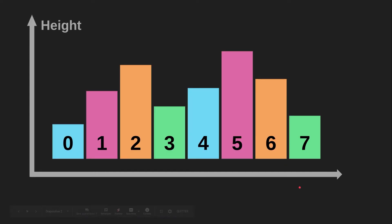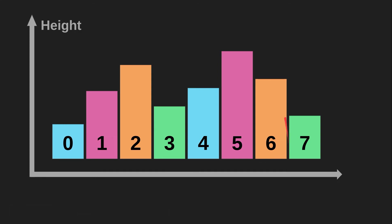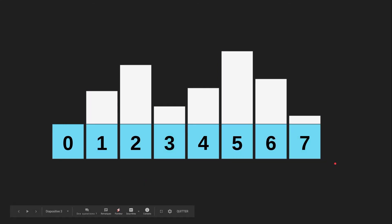So the problem is the following: we are given n positive integers that represent the height of bars in a histogram, and our job is to find the largest rectangle inside this histogram — something like this or like this.